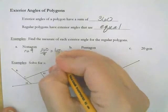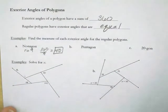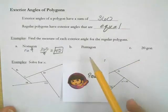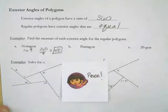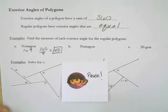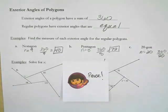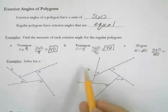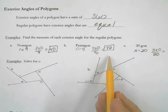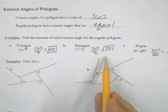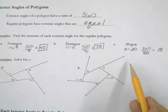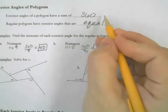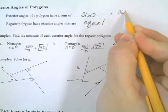Pause the video and try B and C for exterior angles. For a pentagon, it has five sides: 360 divided by 5, so each exterior angle is 72 degrees. For a 20-gon, 360 divided by 20 equals 18 degrees. The rule to find each exterior angle of a regular polygon is: 360 divided by n, where n is the number of sides.